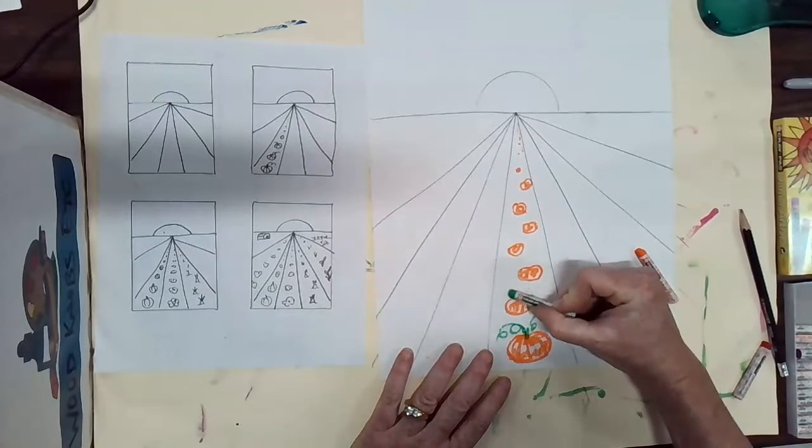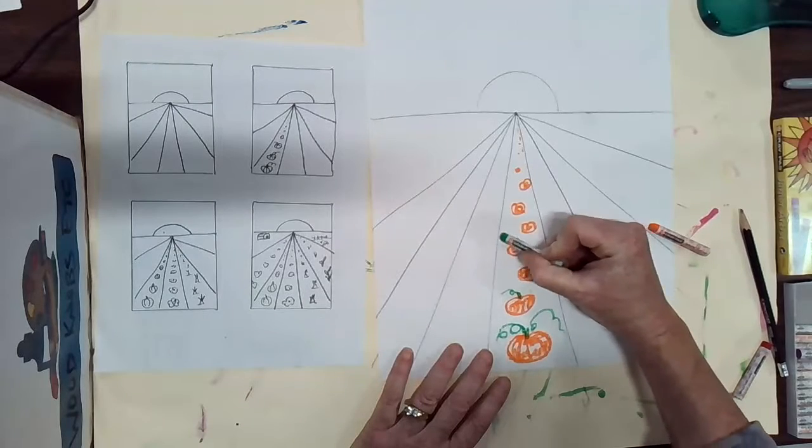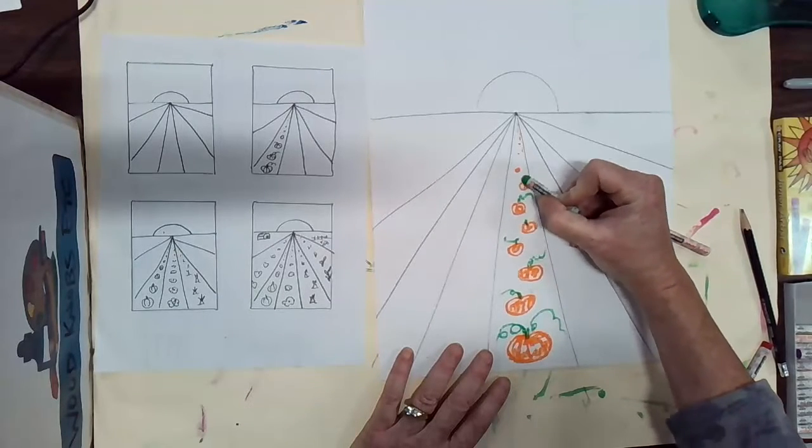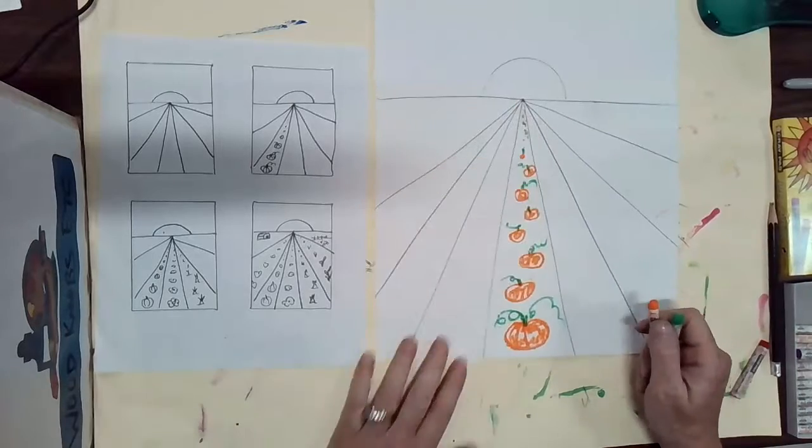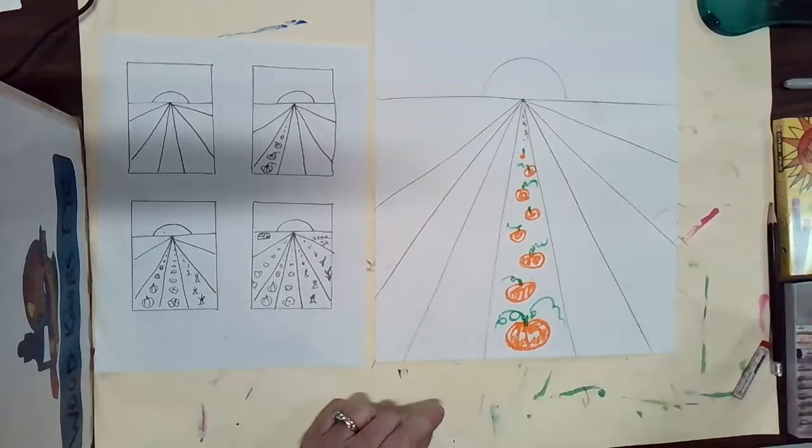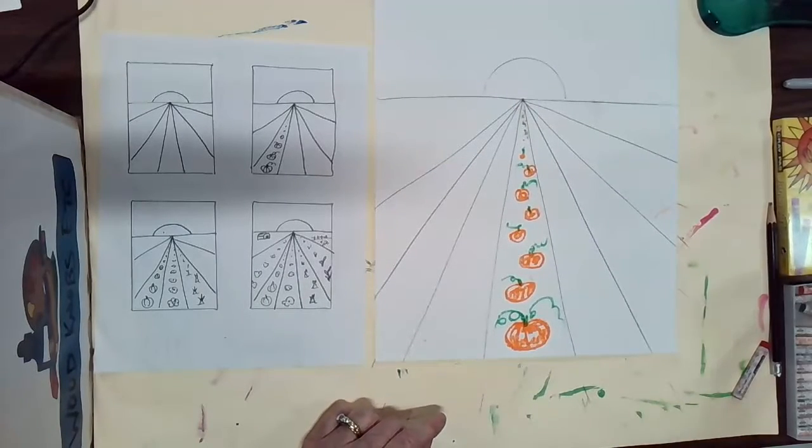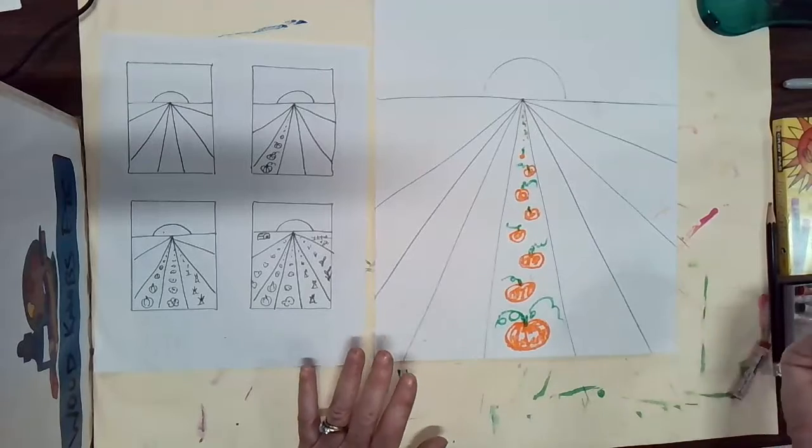I could add some stems again to some of them. I might not see too many details. The further I get back I might just have some little green dots. Now see how quickly I was able to do that. Next I might add another vegetable. You can really be creative with this. You could have flowers in your garden.